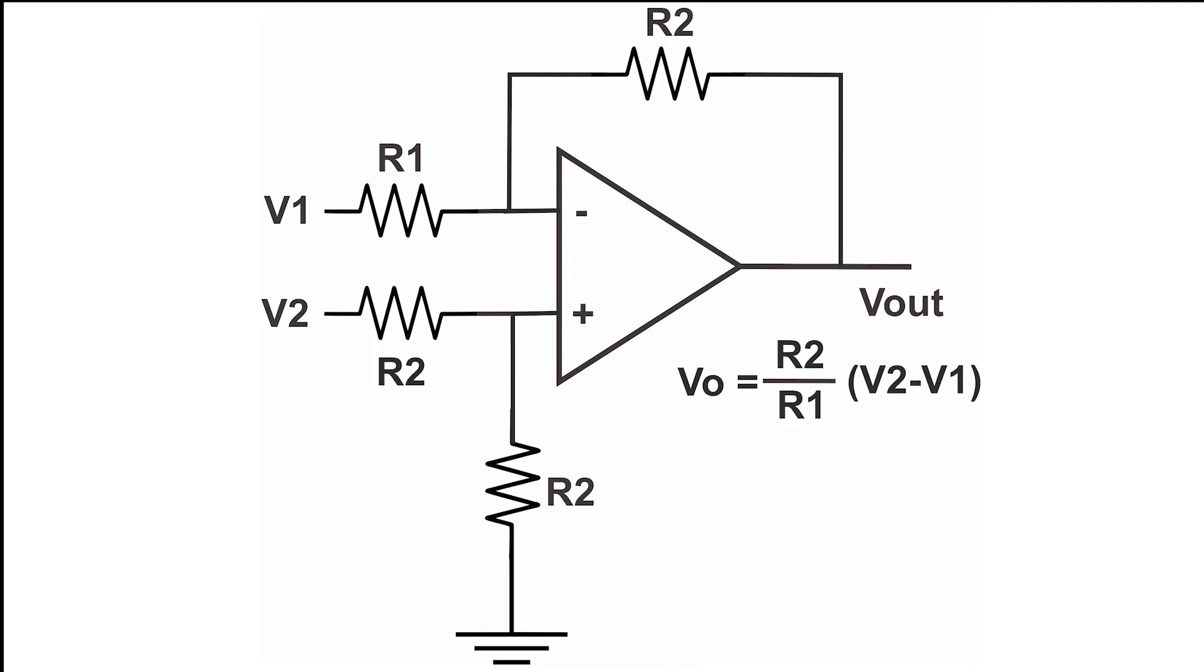So with same resistors value as before, say we have 0.5 volts at V2 and 0.2 volts at V1, it will give us 3 volts.